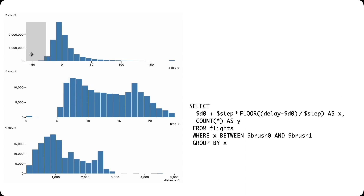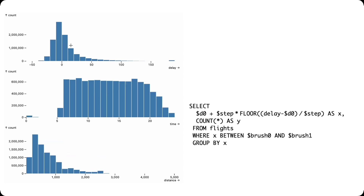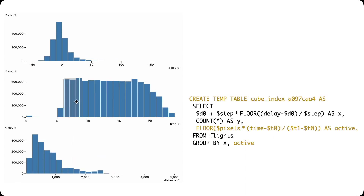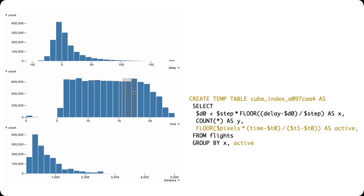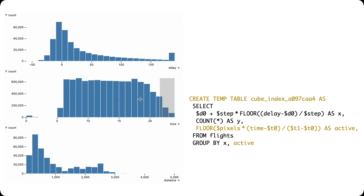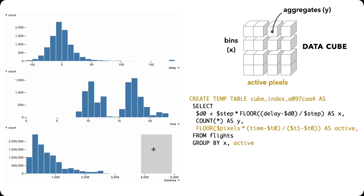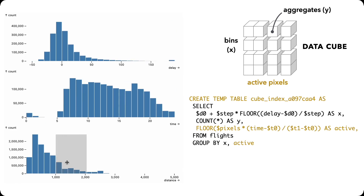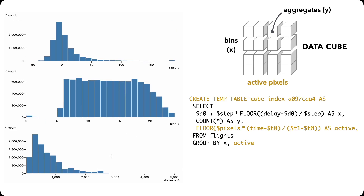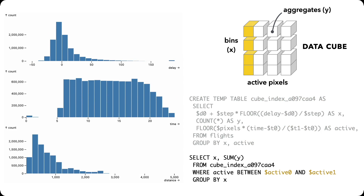Rather than re-query the full backing table on each update, the Mosaic coordinator analyzes queries to automatically generate data cube indexes — binning over all pixels the brush endpoints might occupy to pre-compute aggregate results. Then on each update, we instead query the pre-aggregated data cubes, providing substantial speed-ups.